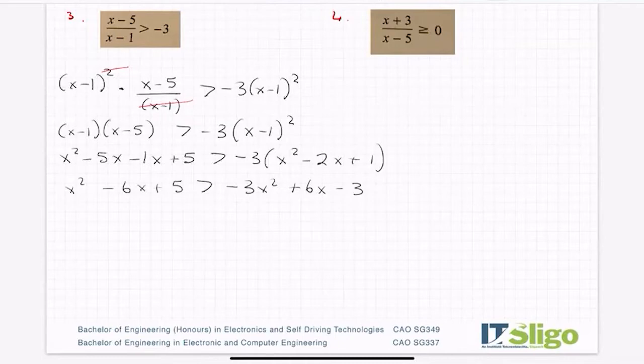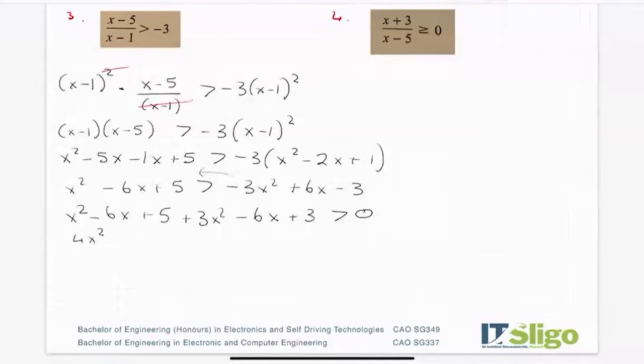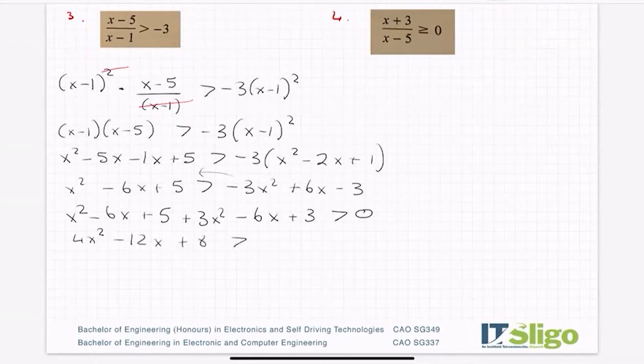It's looking like a quadratic, isn't it? So let's bring everything over to the left, so that I end up with x squared minus 6x plus 5, the minus 3x squared will become plus 3x squared, the plus 6 will become minus 6x, and the minus 3 will become plus 3 greater than 0. Zero because I've everything brought to the left. So let's tidy that up. I get 4x squared minus 12x plus 8 being greater than 0.